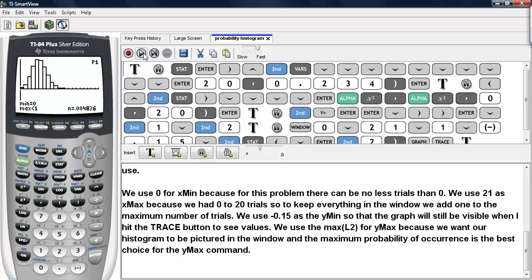We use 21 as X MAX because we had 0 to 20 trials. So to keep everything in the window, we add 1 to the maximum number of trials. We use negative 0.15 as the Y MIN, so the graph will still be visible when I hit the TRACE button to see values.